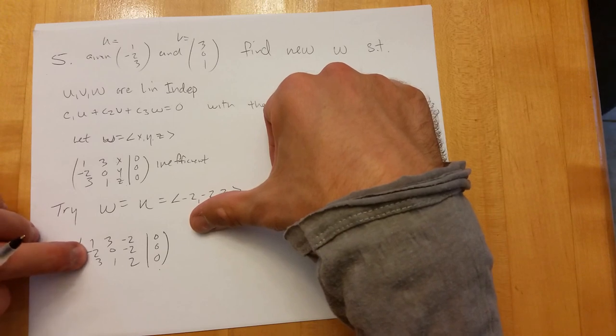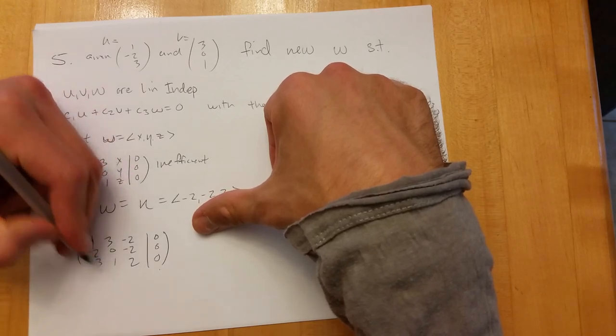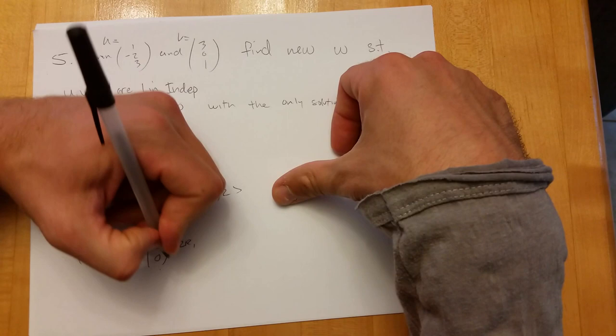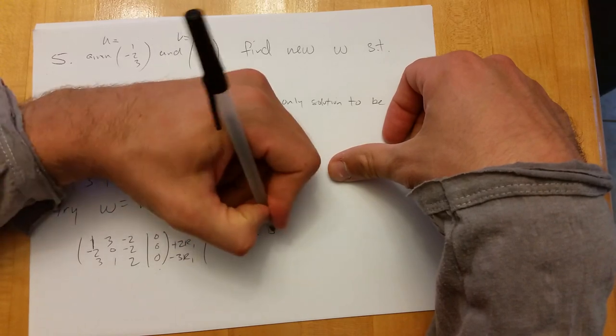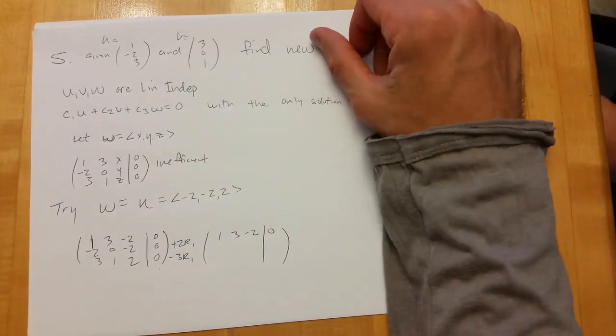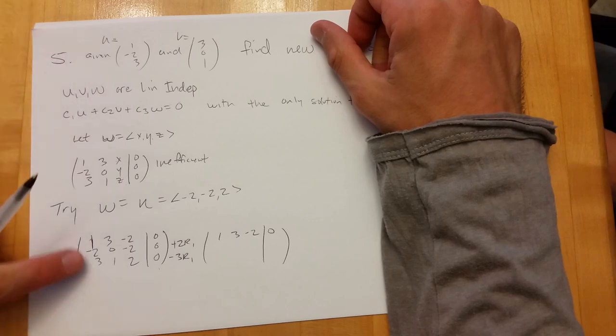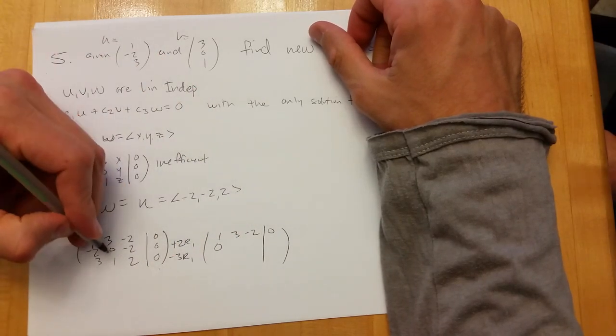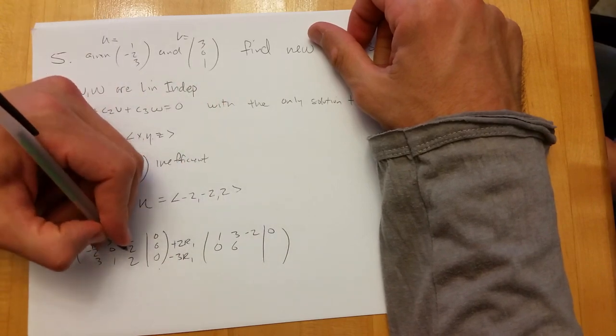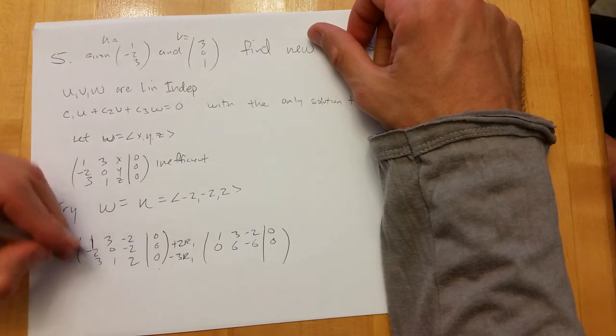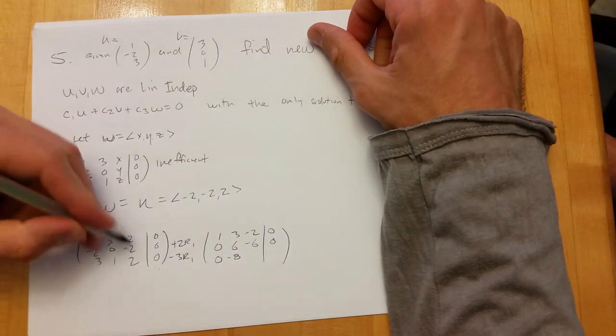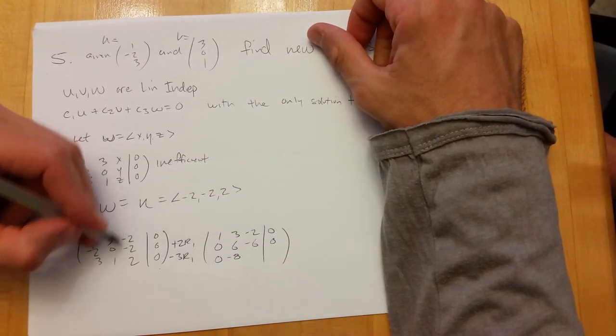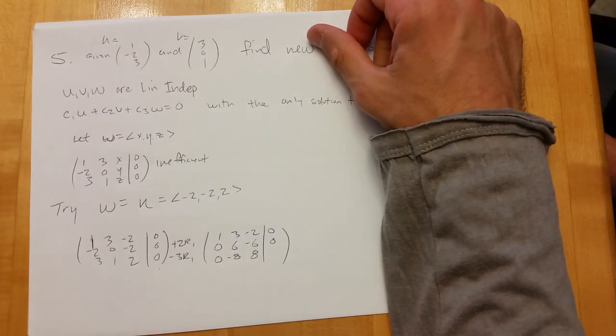We're going to knock out column one first, so I need two row ones here and then negative three row ones here. I'm using that one and knocking out everything else. So we have zero, six plus zero is six, negative four minus two is negative six, and negative nine plus one is negative eight. Positive six plus two is another.